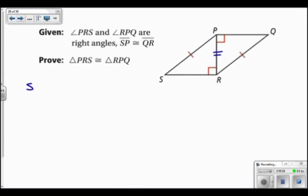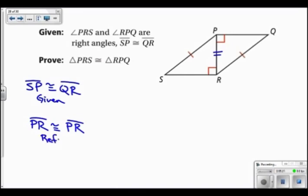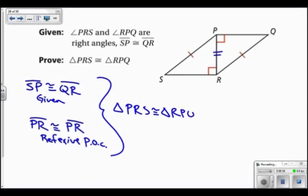So I'm going to say that SP is congruent to QR, and that's given to us. And I'm also going to say that PR is congruent to itself by the reflexive property. So these together tell me that triangle PRS is congruent to triangle RPQ, and that is by the hypotenuse leg theorem.